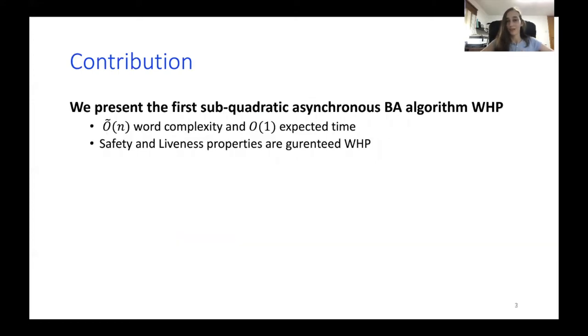And our contribution is we present the first subquadratic asynchronous Byzantine agreement with high probability. We provide safety and liveness properties with high probability, which means that the probability tends to 1 as n, the number of processes, goes to infinity. And it obtains O tilde of n word complexity in expected constant time.